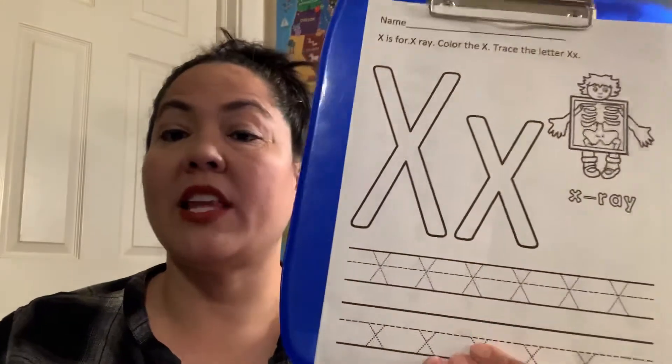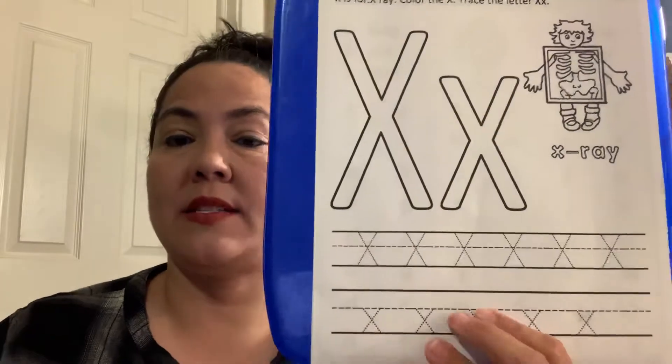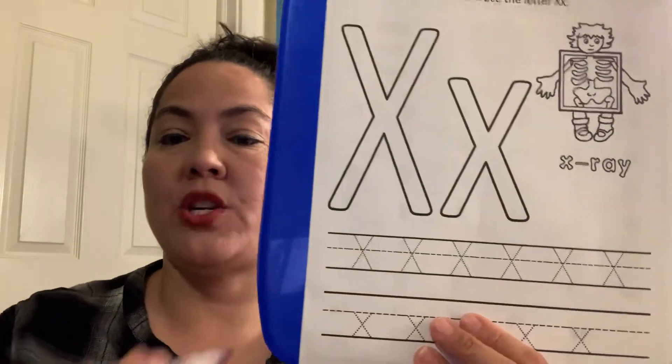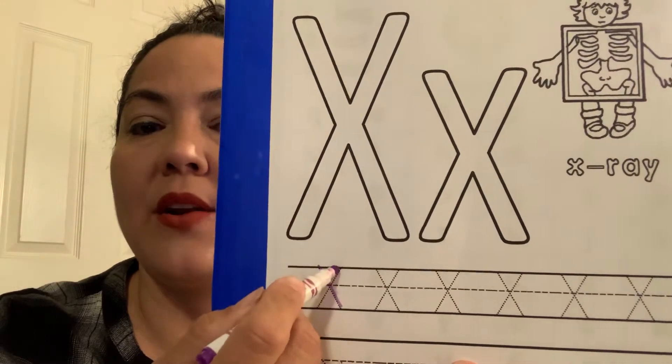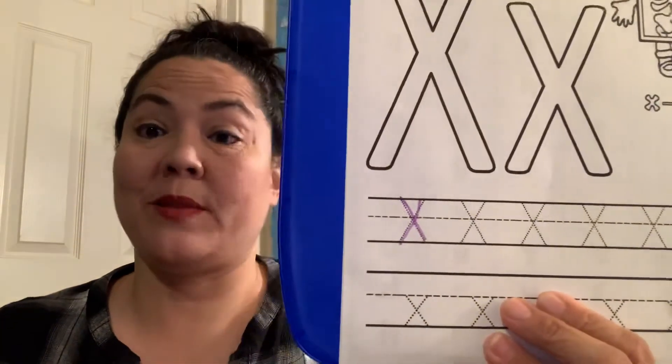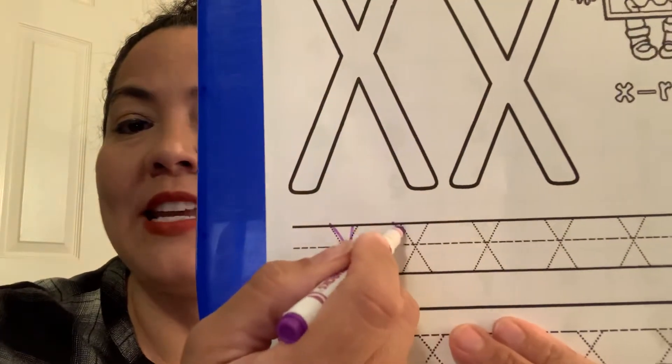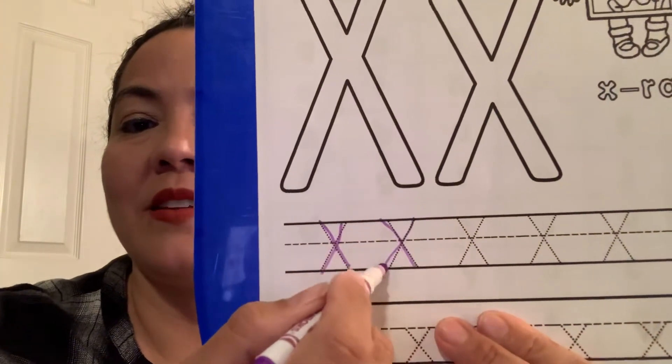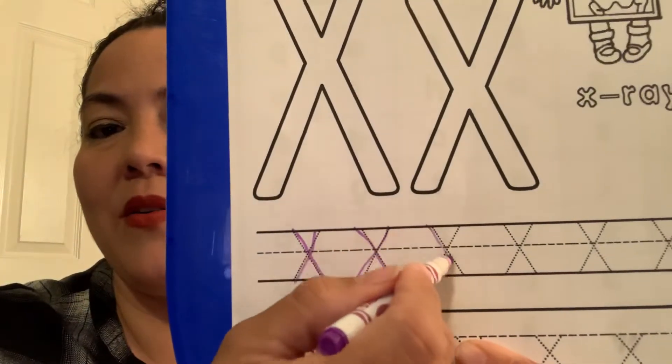All right. So we're going to practice our letter X's. Remember, we have uppercase. Can you guys say uppercase and lowercase? And I want you guys to practice your uppercase X's. Go down and then across. Just like that. It's super simple. It's one of Ms. Lisa's favorite letters. We're going to go down and across. Can you guys try that? We're going to go down and across.